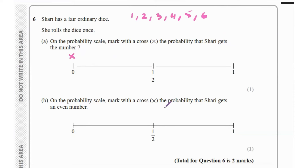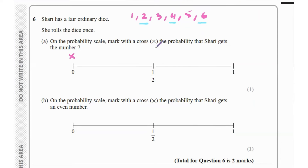The next part asks for the probability that Shari gets an even number. The numbers she can get are 1, 2, 3, 4, 5, or 6. The even numbers are 2, 4, and 6. So the probability of getting an even number is 3 over 6, which equals 1 over 2. This corresponds to the midpoint on the probability scale.